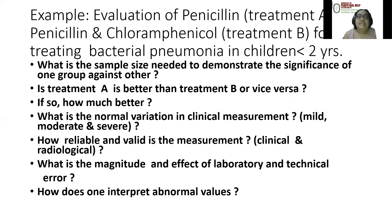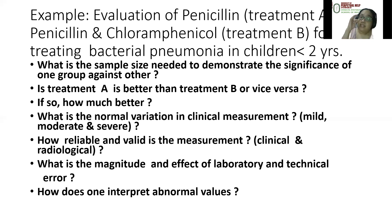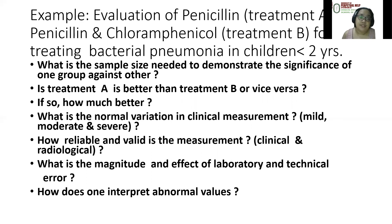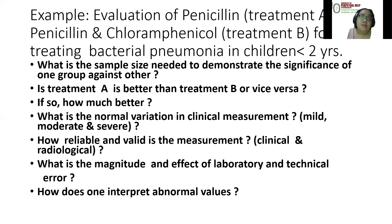For example, with penicillin and chloramphenicol in treating bacterial pneumonia in children less than two years old, we need biostatistics to answer the following questions: What sample size is needed to demonstrate significance of one group against the other? Is treatment A better than B or vice versa? If yes, how significantly so? What is the normal variation in clinical measurement if mild, moderate, and severe? How reliable and valid is the measurement? What is the magnitude and effect of laboratory and technical error? And how does one interpret abnormal values?